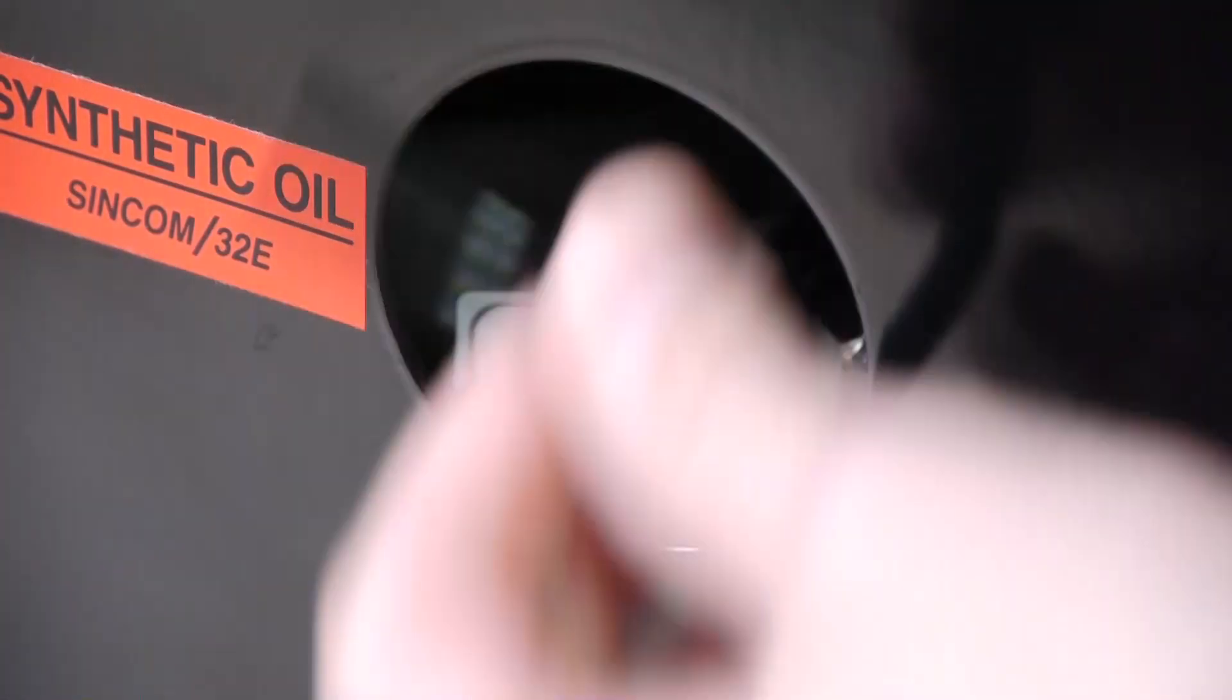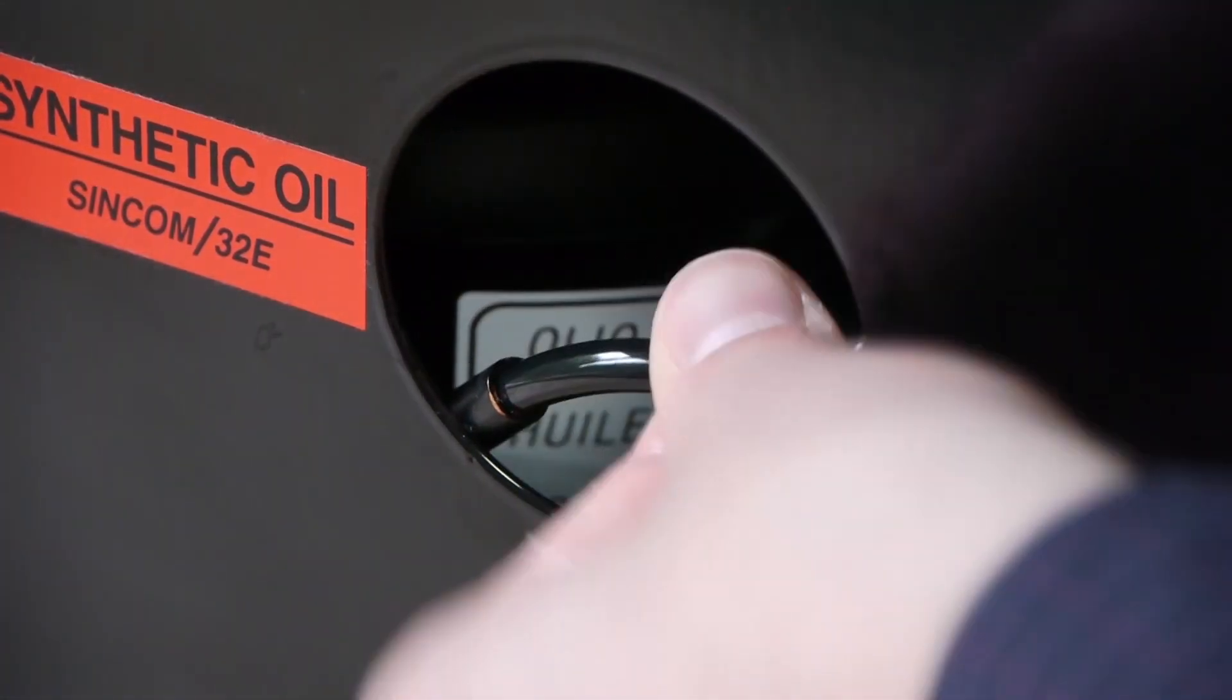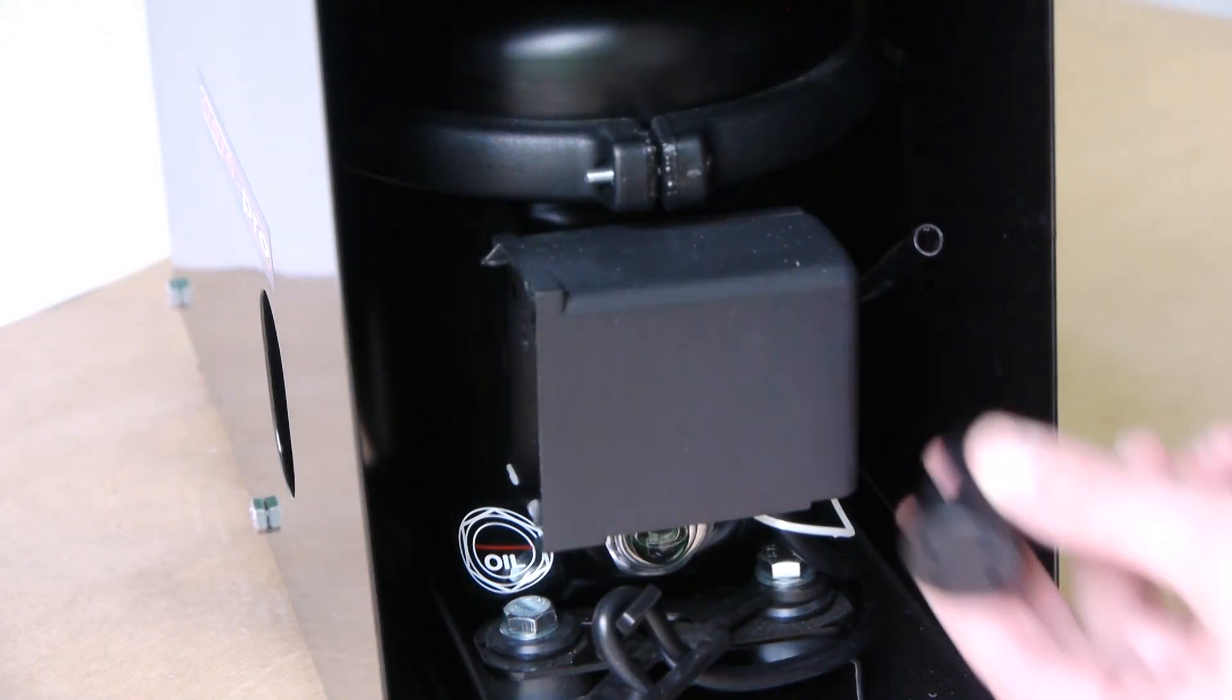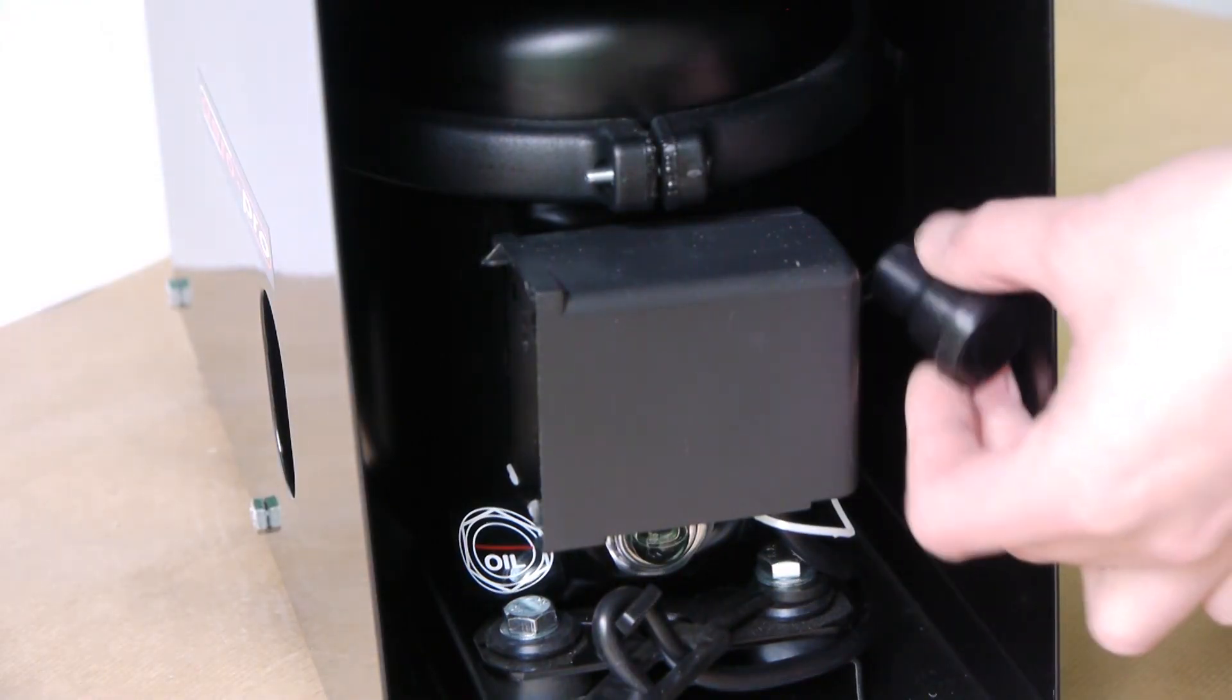After filling up, plug the black plastic hose back into the filler pipe. Then insert the air filter provided into the intake socket.